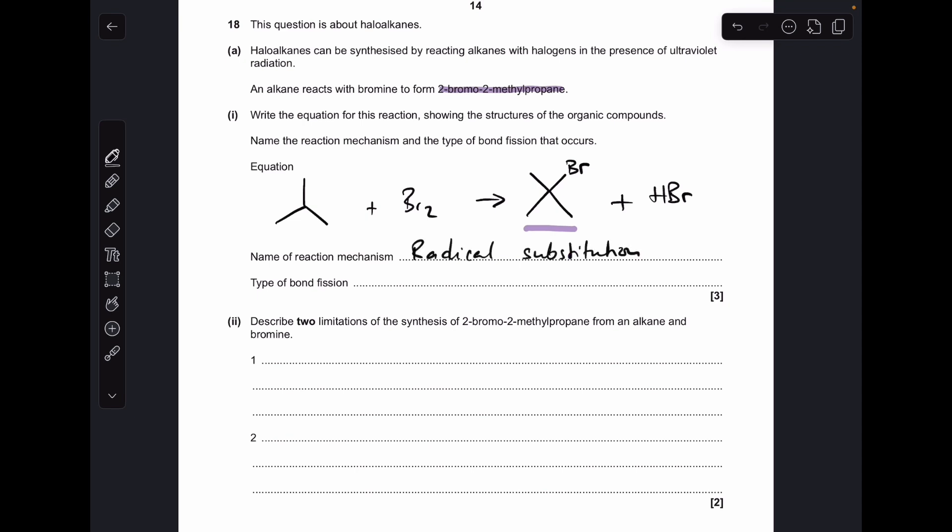The name of the mechanism is radical substitution, and the type of bond fission is homolytic.